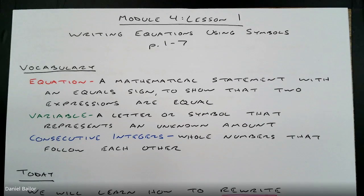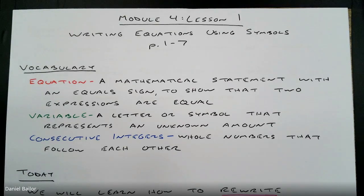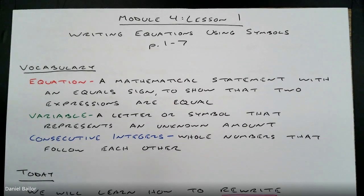I'd like to start by writing down some vocabulary words that we'll see in this lesson. We have three vocabulary words: Equation, Variable, and Consecutive Integers. If you're watching on the video, I would recommend pausing the video right now and writing down these vocabulary terms. Or if you can write fast, you can write while I'm explaining, but it might help you to pause first.